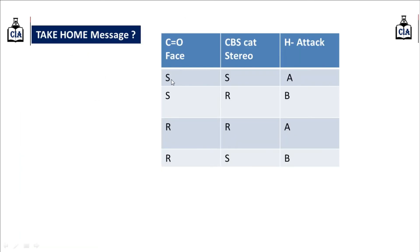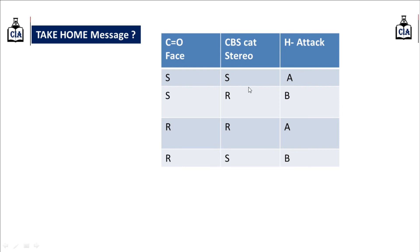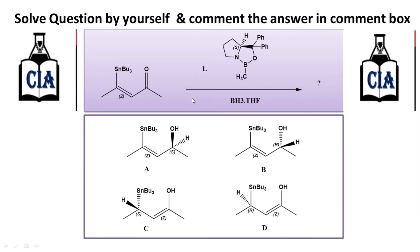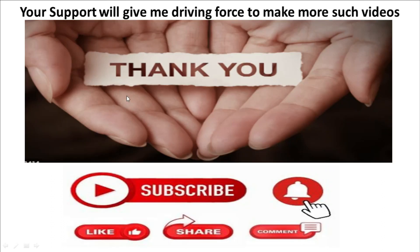To remember: if the ketone face is si and the CBS catalyst stereochemistry is S, hydride delivery is from above the plane. If the face is si and the catalyst is R, attack is from below the plane. Just remember this table — by using it you can solve any example. I request all of you to solve the given question by yourself and comment the answer in the comment box. I hope this video is helpful for all of you. Thank you!